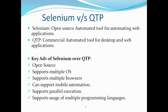Another major advantage of Selenium is that it supports multiple programming languages. It is not limited to just Java — it can support Java, Python, Ruby, Pearl, and more. This wide variety of language support makes it one of the best open-source tools available in the market today.